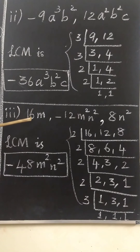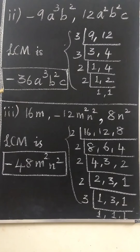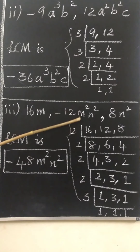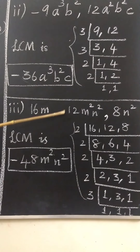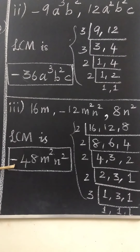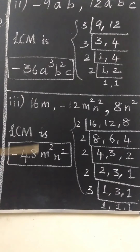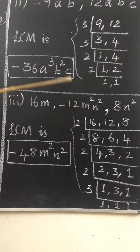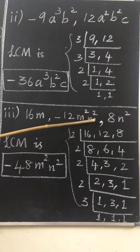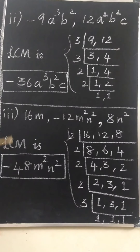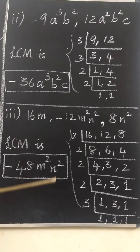The next sum is: find the LCM of 16m, −12m²n², and 8m². Three terms are given. First, we have to calculate the LCM of 16, 12, and 8 by prime factorization method — it is 48. As there is a negative in the question, in the answer also we have to choose the negative sign. For m and m², we select m². For n², we select n². So the LCM of 16m, −12m²n², and 8m² is −48m²n².